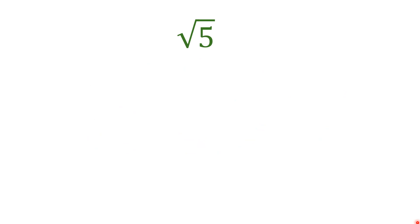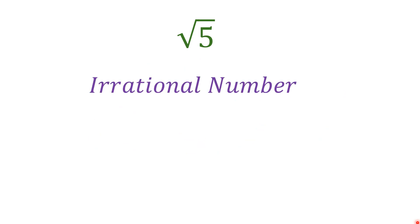For example, the square root of 4 is 2 because 2 squared is 4, or 2 times 2 is 4. For square root of 5, we cannot simply find a number that, if you multiply it by itself, you will get 5. So this is what you call an irrational number.